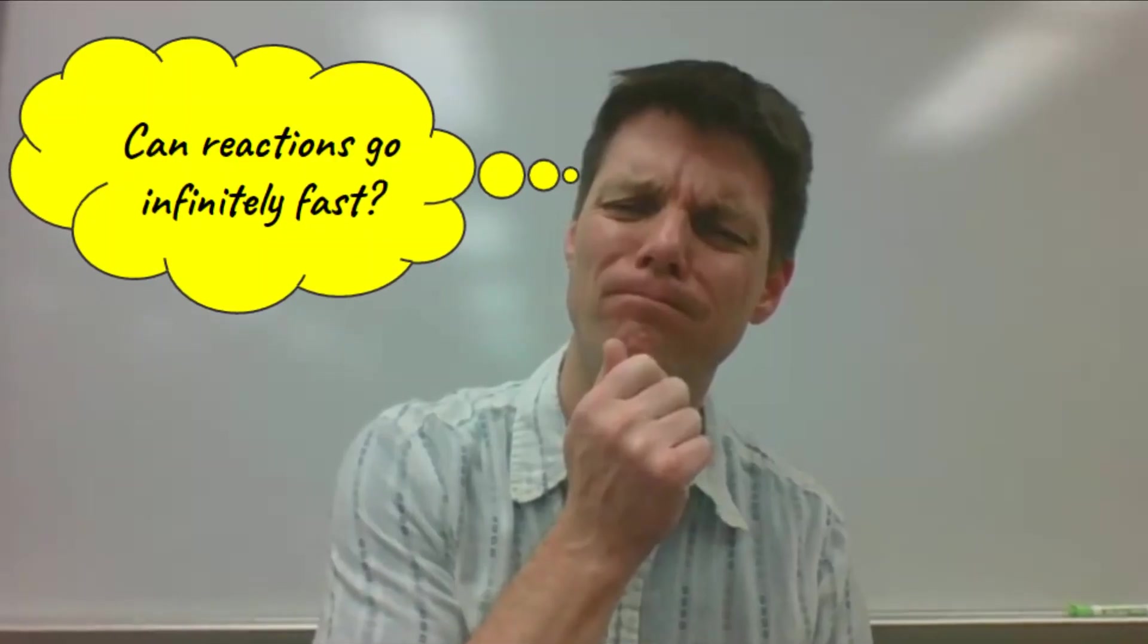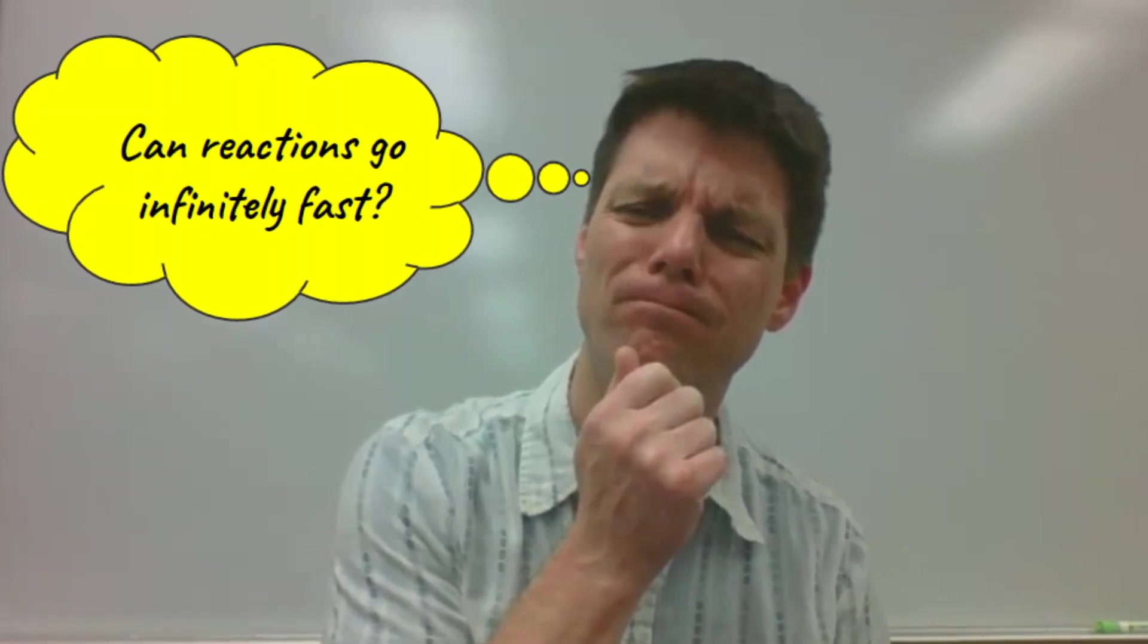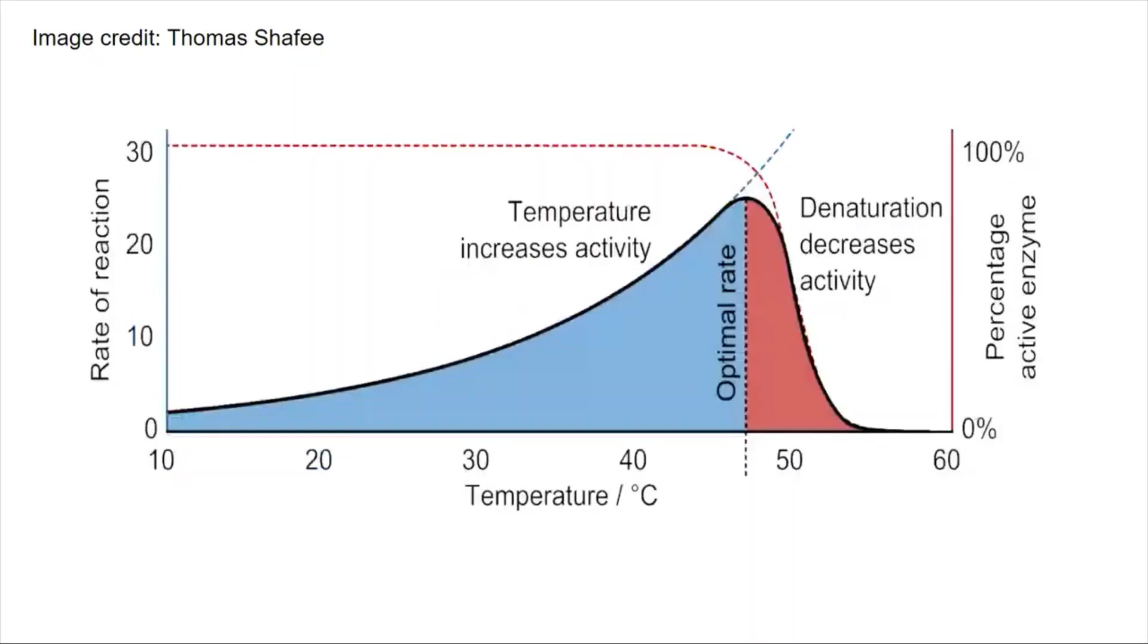But can reactions go infinitely faster as long as we keep increasing the temperature? The answer is no. The second graph shows an enzyme catalyzed reaction. This means that a chemical reaction is assisted by protein molecules called enzymes. The ability of enzymes to catalyze a reaction increases as temperature goes up as long as the temperature doesn't get too hot which causes the enzyme to denature. That means the shape of the enzyme becomes altered making it unable to do its job anymore. I've added a link to a video playlist about enzymes if you want to learn more about them.